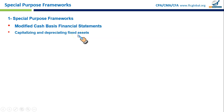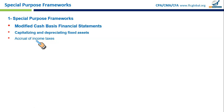Common modifications in modified cash basis include: First, capitalizing and depreciating fixed assets — recording large purchases like machinery, equipment, or buildings as assets rather than immediate expenses, then depreciating them accordingly. For example, a company that buys machinery for $50,000 would treat it as an asset and depreciate it over five or ten years rather than expensing it immediately. Second, accrual of income taxes — accounting for taxes incurred but not yet paid, recorded as a liability.